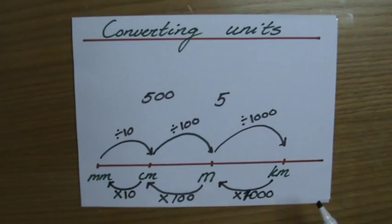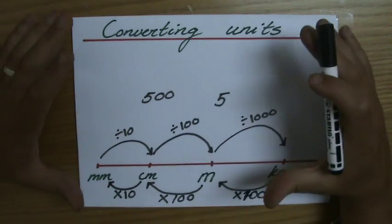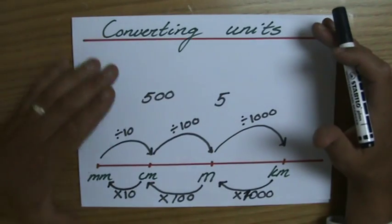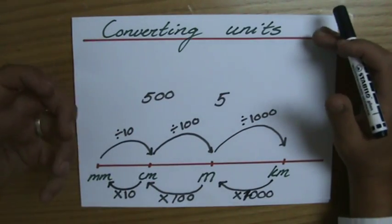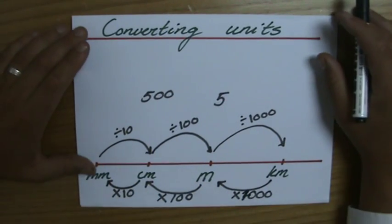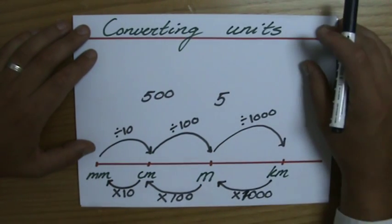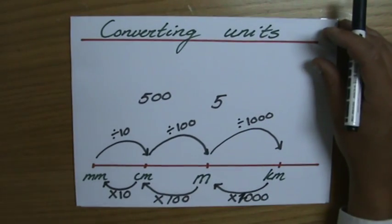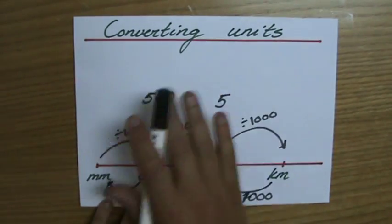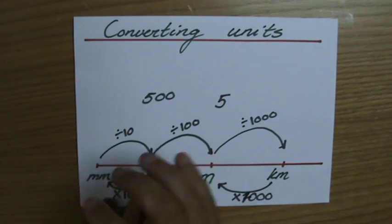or 10. Now this doesn't only apply for lengths. Like I said before, these are also grams, or any situation where you have milli, centi, then your actual unit, and then kilo—meter, gram, or byte. Now let's have a look at some example questions in the next video where we can really test our understanding of this. I'll see you there.